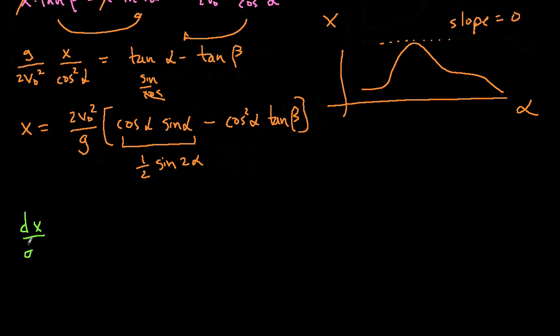So in order to solve this maximization problem, we're going to take the derivative of x with respect to alpha. So dx d alpha, and then we're going to set it equal to zero and solve for alpha. And that's going to be the point at which we've optimized or we've maximized the range of x.